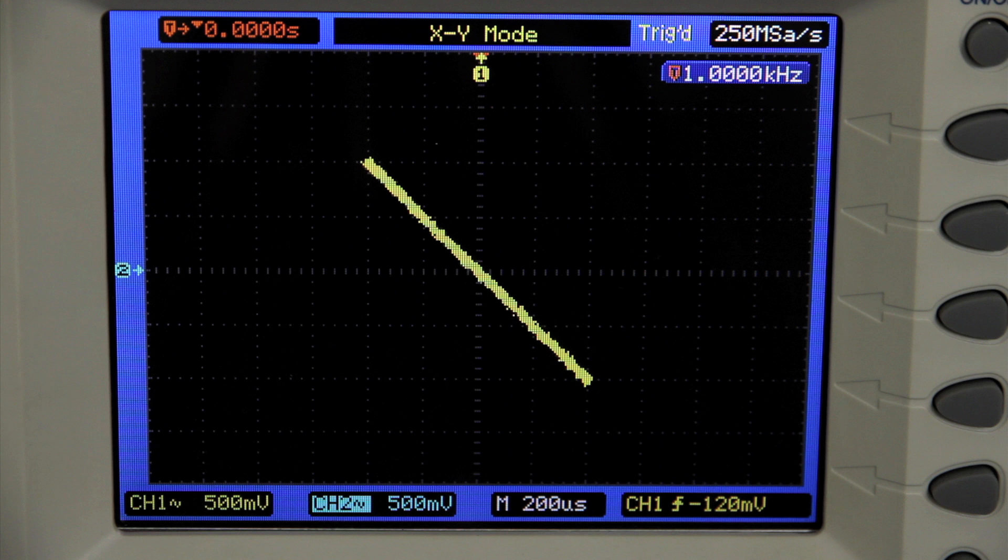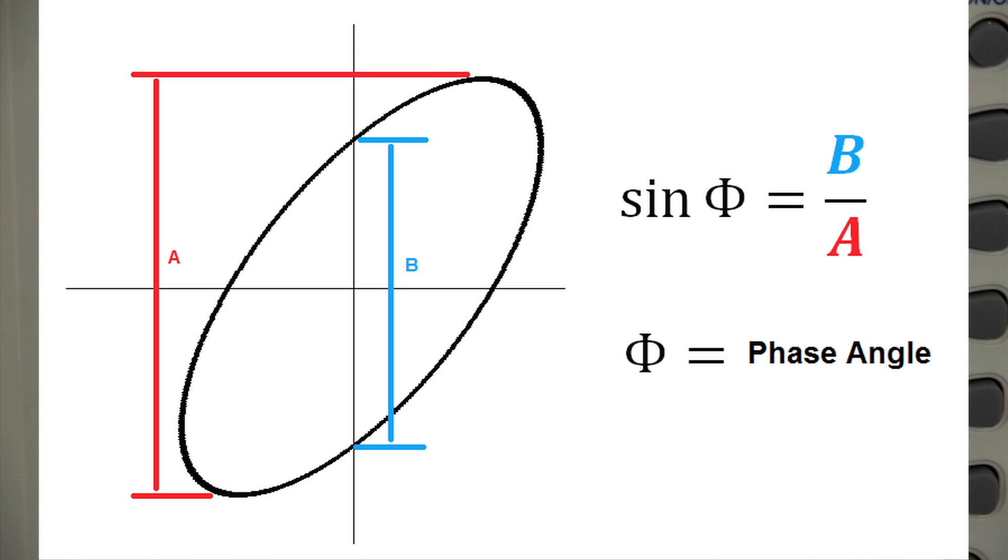You can also calculate the phase shift directly from looking at the Lissajous pattern by this formula. Take the measurement marked by A and by B. Sine phi equals B over A, where phi is the phase angle. The phase angle is then the arcsine of B over A.